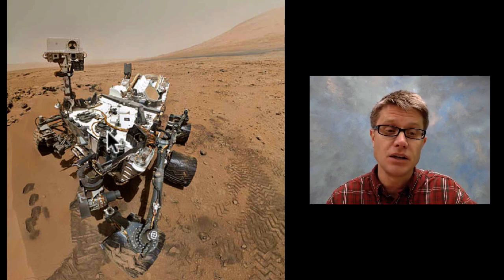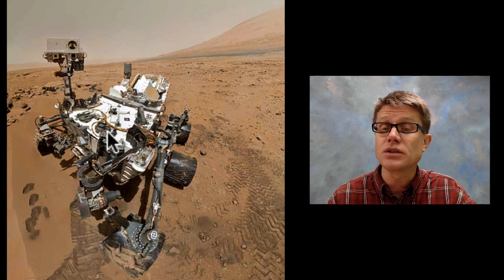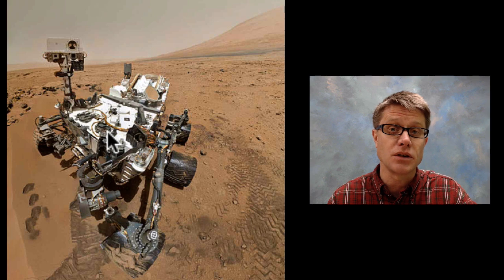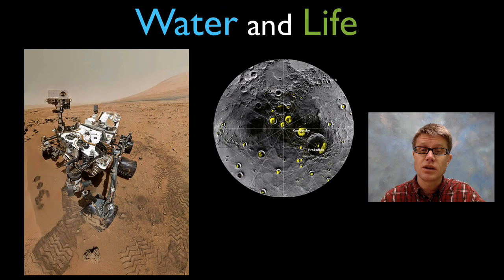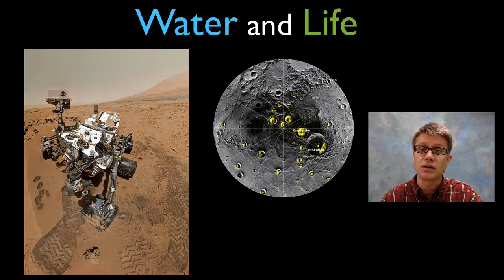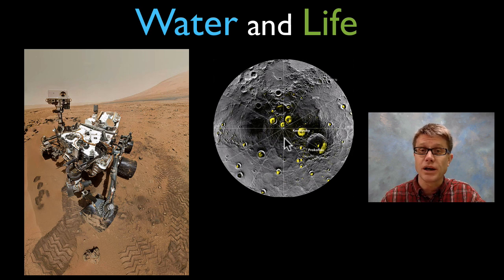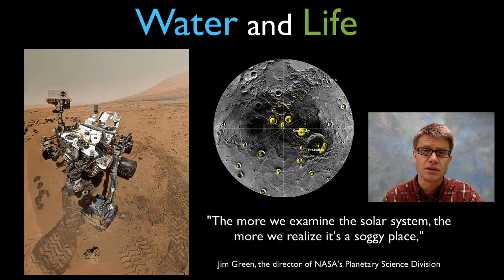Now they haven't found any evidence of life, but they are finding organic material, and they're not sure if it was there or if they maybe brought it with them. Also in the news last week they found water on Mercury. So wherever we look in the solar system we're finding water. Water was probably delivered like it was on our planet — in meteorites and asteroids — and it still remains there today.